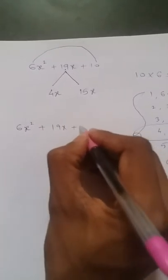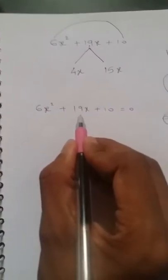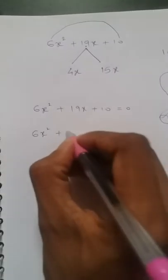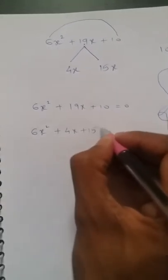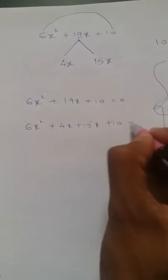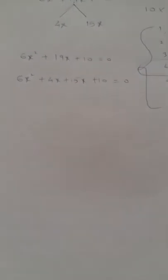6x² + 19x + 10 = 0. Here in the place of 19x we will write 15x and 4x. So 6x² + 4x + 15x + 10 = 0.